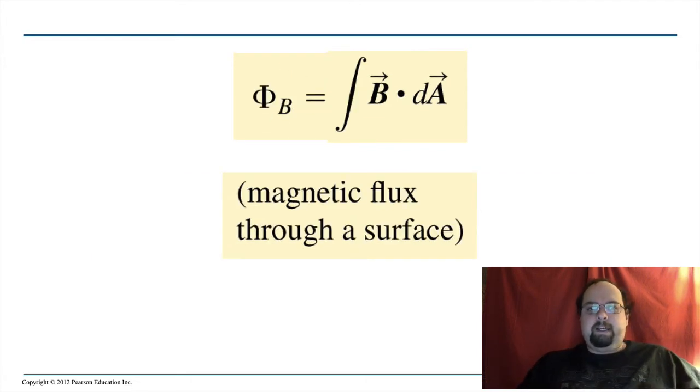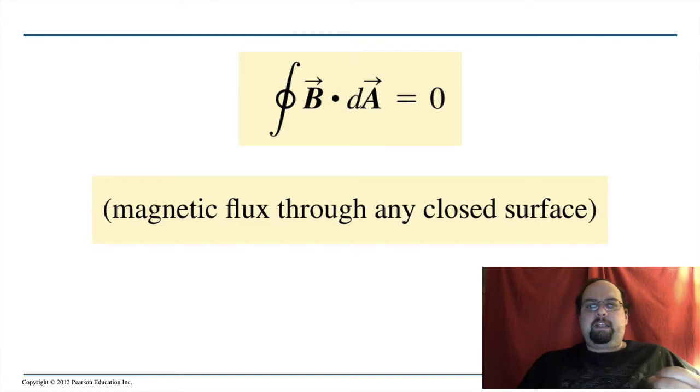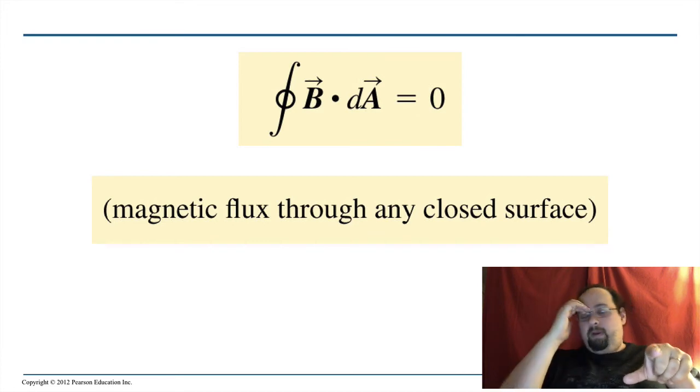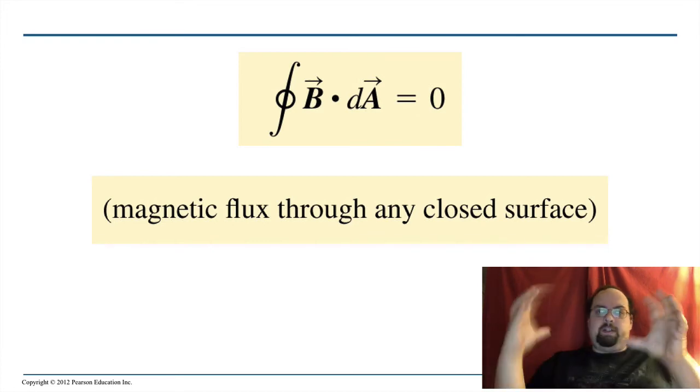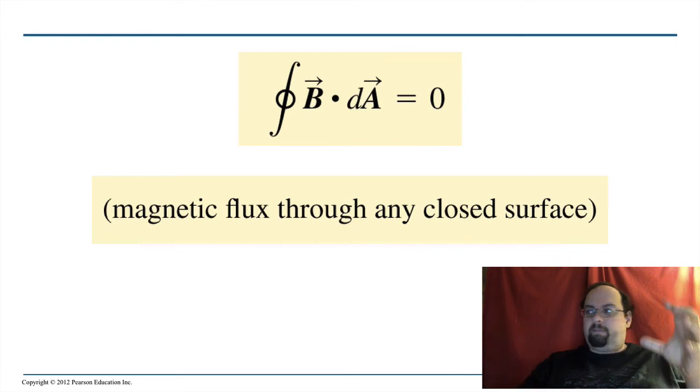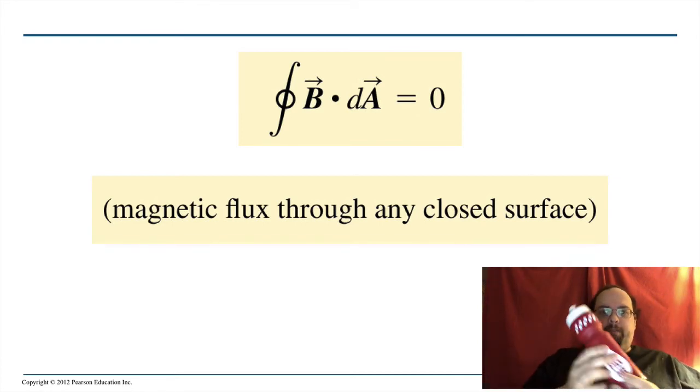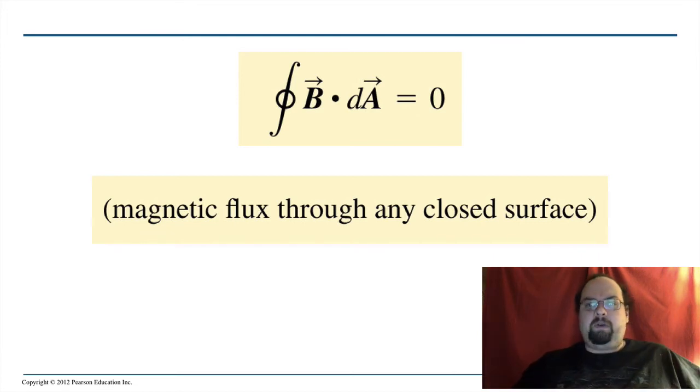So the difference between this, this is the flux through a surface, this is the flux through a closed surface. So you can get flux through, like a pane of area, like a piece of paper. But if it is a closed surface in three dimensions, it's a shape that encloses something, say, this bottle, right? It's closed and there's no holes in the shape itself. Then the flux enclosed there is always zero.